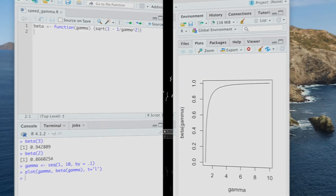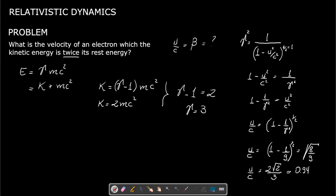Coming back to the physics, there is no dependence on the mass of the particle. We asked for the velocity of an electron, but the answer does not depend on the mass. If we ask for the velocity of a proton whose kinetic energy is twice its rest energy, the answer will be the same — only gamma equals 3 matters, and there is no dependence on the rest energy.